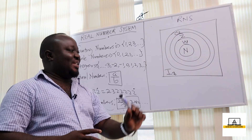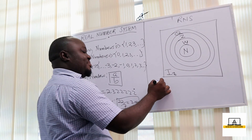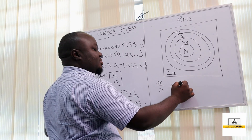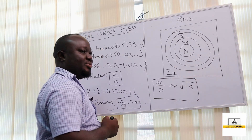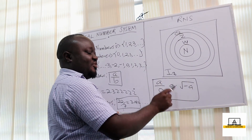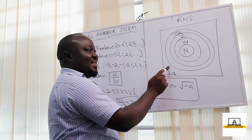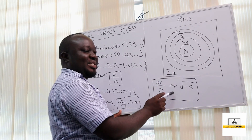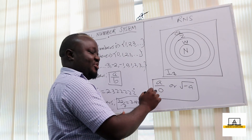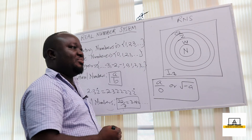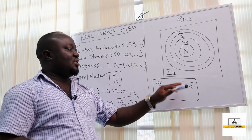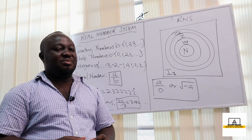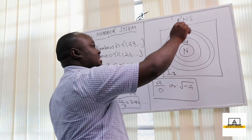Any number you can think of in this world is in the real number system, except any number over zero or the square root of negative numbers. These two types of numbers do not exist in the real number system because they are imaginary — we can only imagine them. There is no definite answer for anything over zero or the square root of negative numbers.